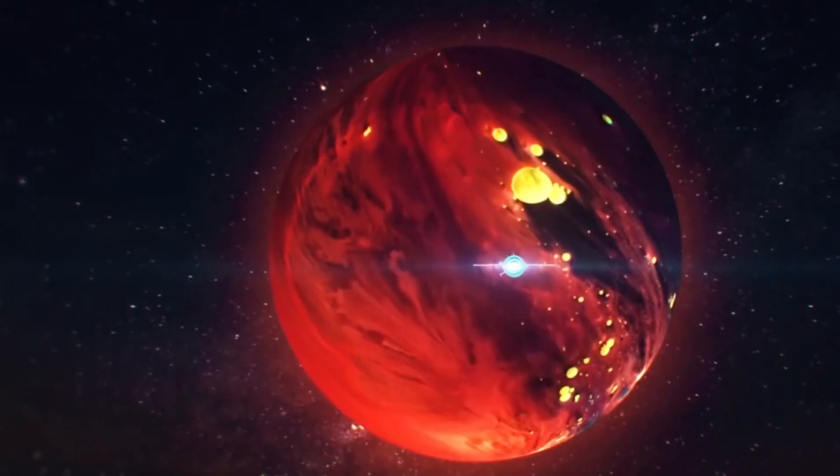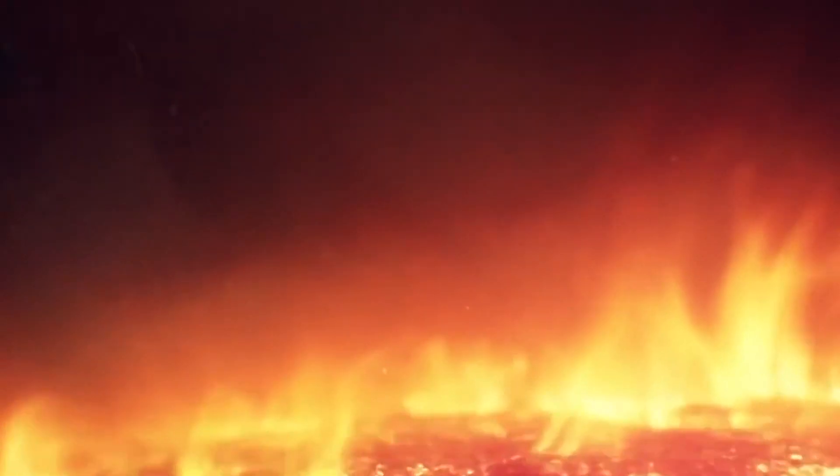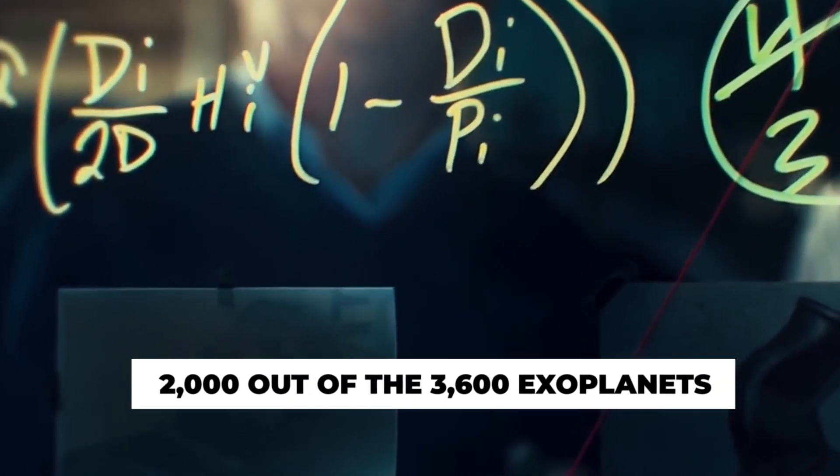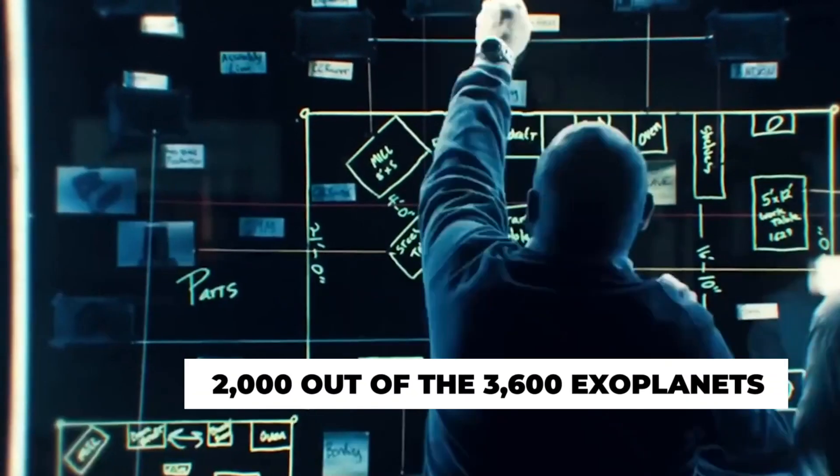Scientists discovered a massive and increasing number of exoplanets almost the shape of the Earth orbiting distant stars. Between 1995 and 2015, NASA discovered about 2,000 out of the 3,600 exoplanets loitering the universe today.